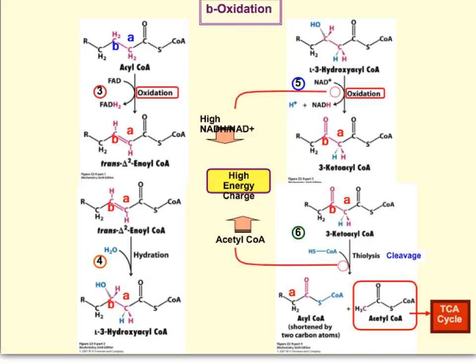The acetyl-CoA can go into the TCA cycle or be used in several other pathways, and all of the reducing equivalents obtained along the way can feed into the electron transport chain.